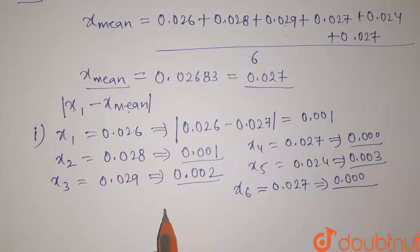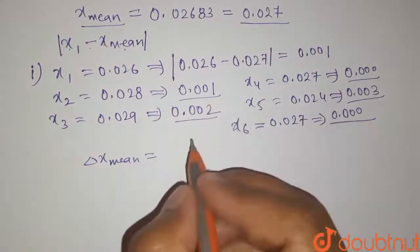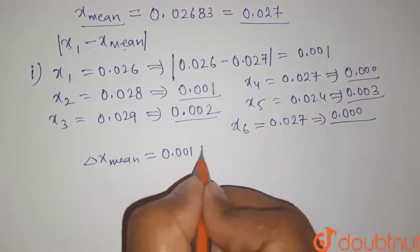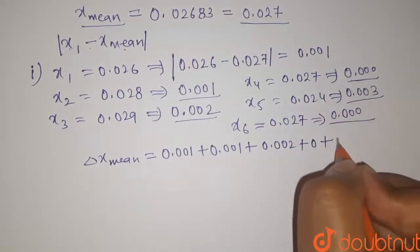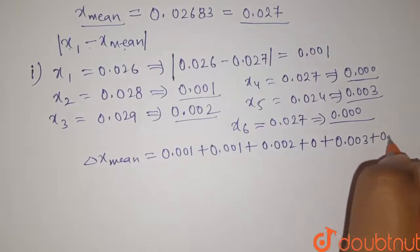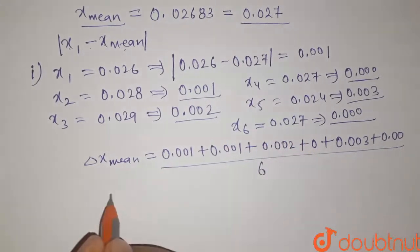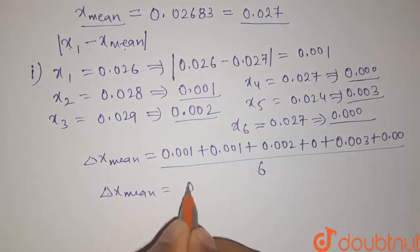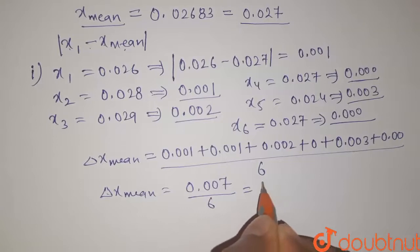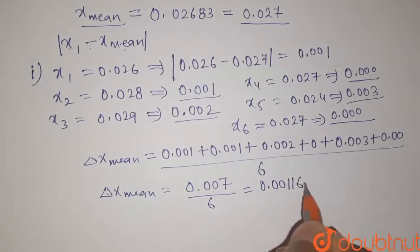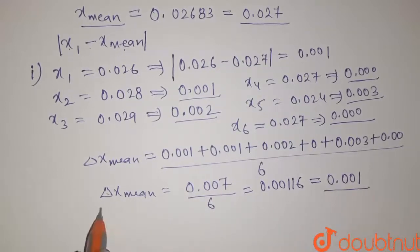Now we have to find the mean absolute error, which is the average of all these absolute errors. It will be 0.001 plus 0.001 plus 0.002 plus 0 plus 0.003 plus 0.00, divided by 6. This equals 0.007 divided by 6, which gives 0.00116. On rounding off, it equals 0.001. So this is the mean absolute error.